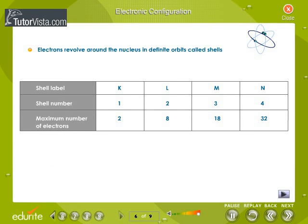Electronic configuration. Electrons revolve around the nucleus in definite orbits called shells. The shells are labelled as K, L, M, N. They are numbered as 1, 2, 3 and 4. They can hold a maximum of 2, 8, 18 and 32 electrons respectively.